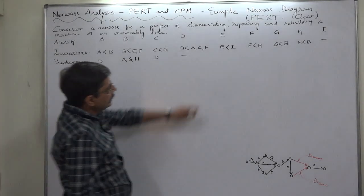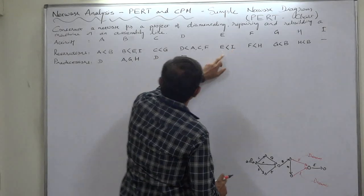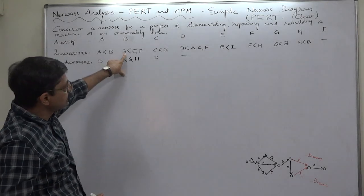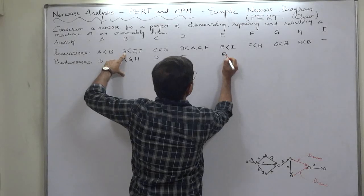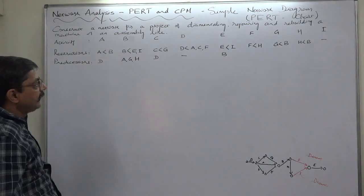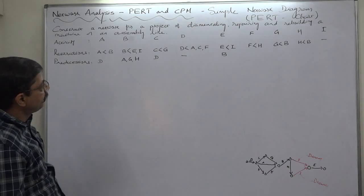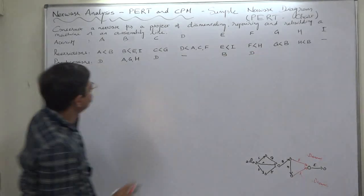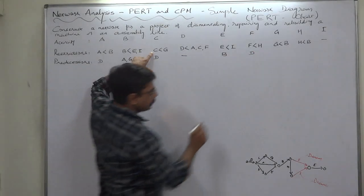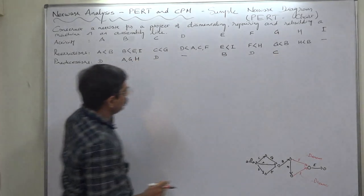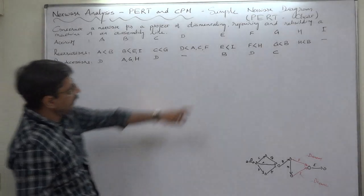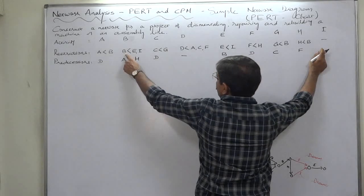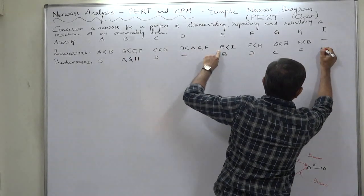E: B is predecessor of E. Then F: which one is predecessor of F? D is the predecessor of F. G: C is the predecessor of G. H: F is the predecessor of H. I: B and E both are predecessors of I.